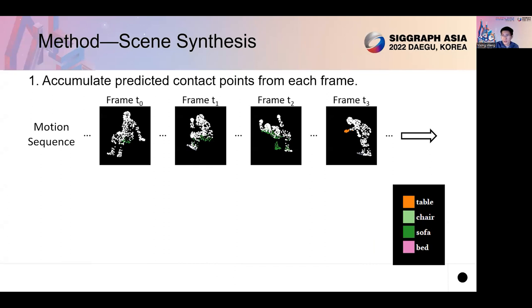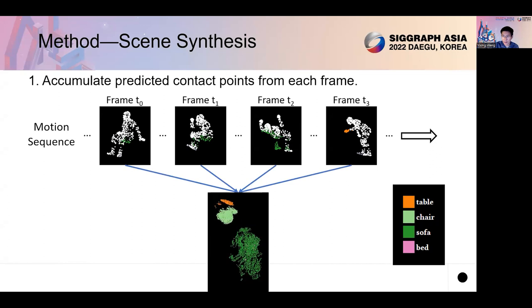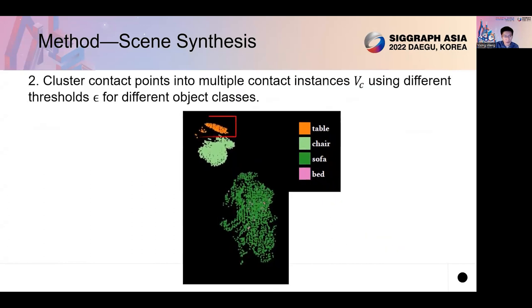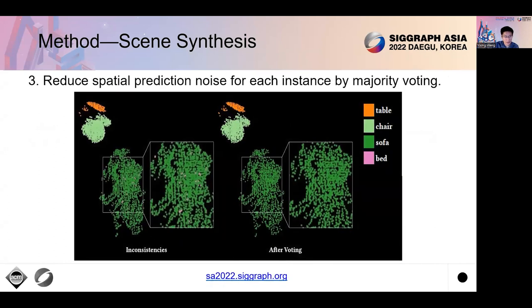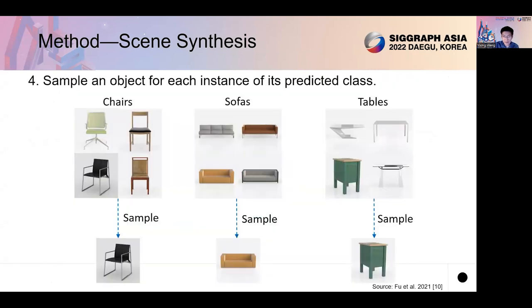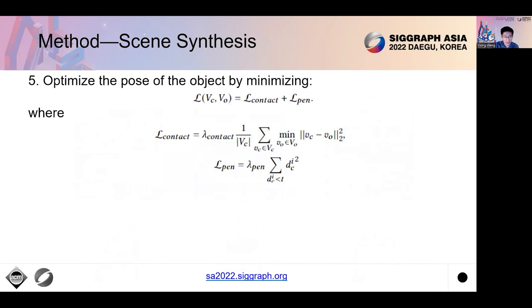The second important module of SUMMON is the SYNC synthesis module. In this module, we first accumulate the contact points predicted by ContactFormer from each frame. Then, we cluster the accumulated contact points into multiple contact instances using different thresholds epsilon for different object classes. Then, we reduce the spatial prediction noise for each contact instance by majority voting. After that, for each contact instance, we sample an object of the instance's predicted class, and then we optimize the pose of the object by minimizing a loss function composed of the contact loss and the penetration loss.